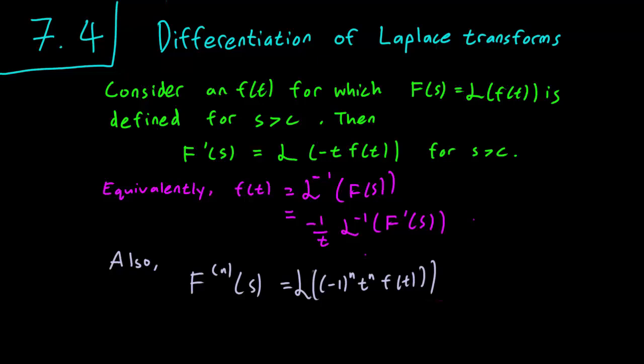Let's consider a function f for which the Laplace transform exists for s greater than some constant c. The main point of this video is that the derivative of the Laplace transform is going to be equal to the Laplace transform of minus t times the little function f. So just multiplying the function by minus t gives you the derivative of the Laplace transform.